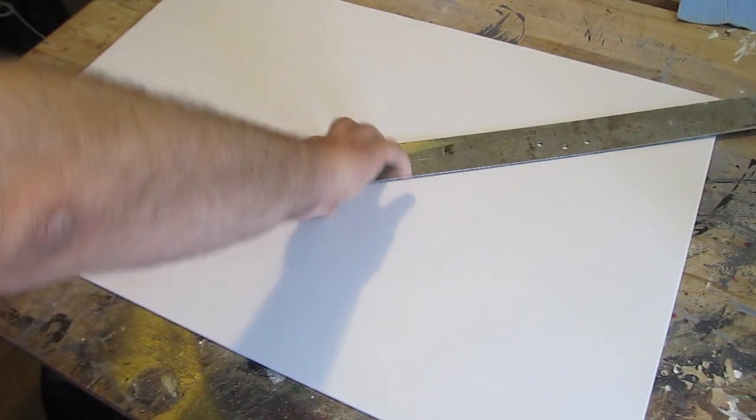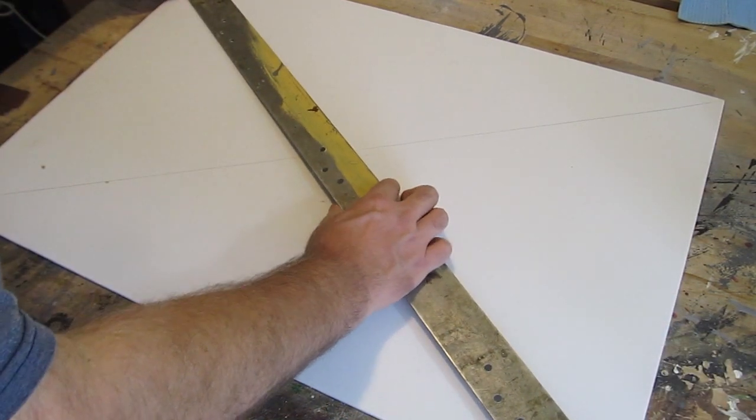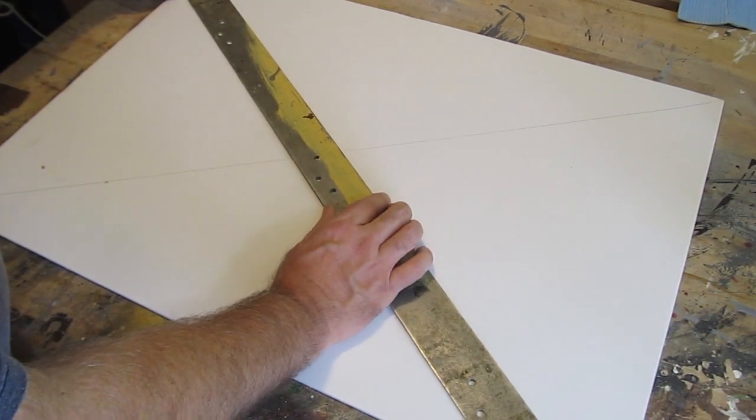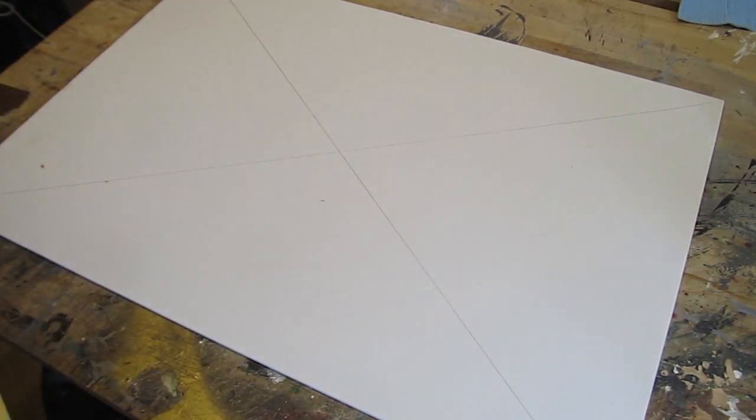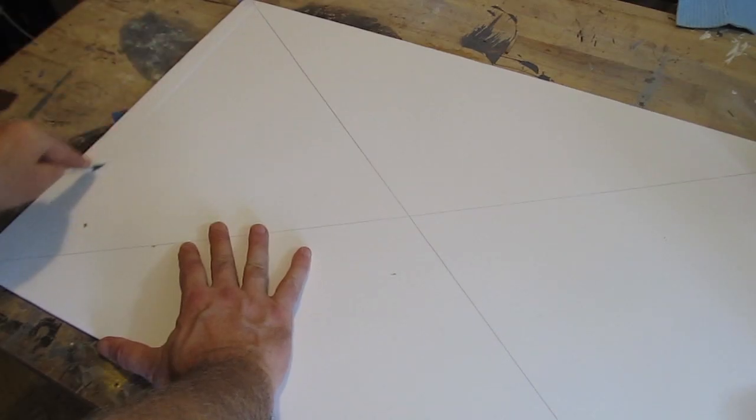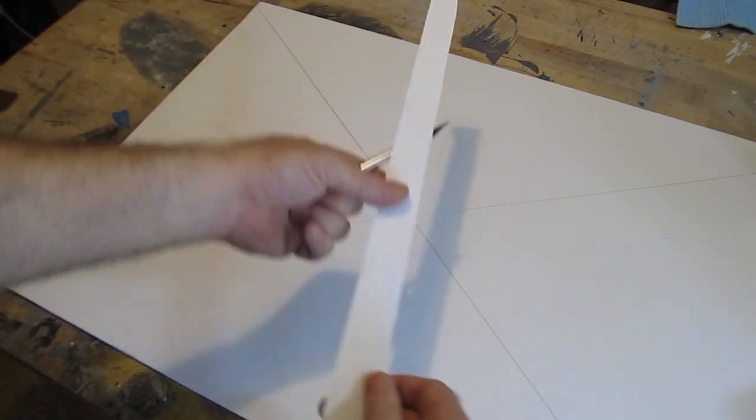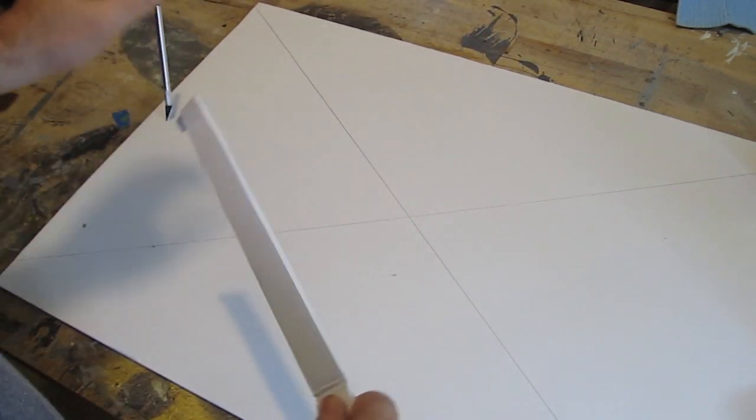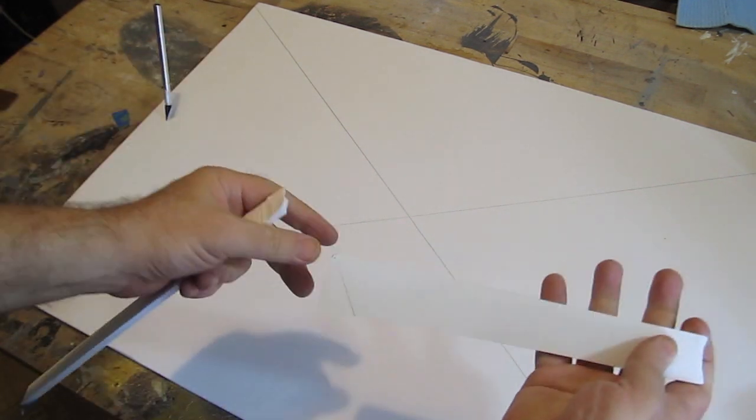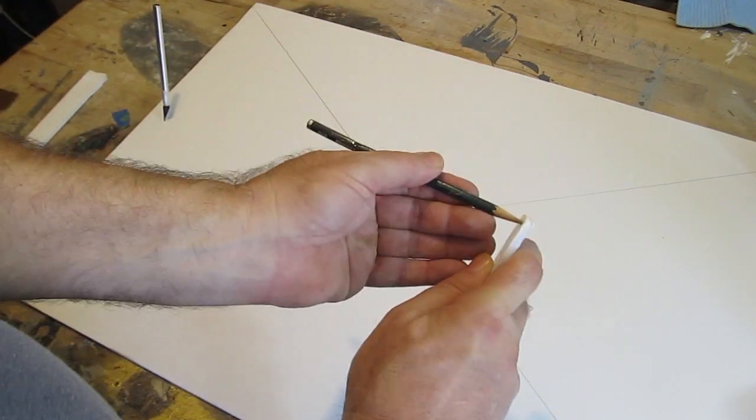Grab yourself a sheet of foam board. And you can use cardboard for this. You don't have to use foam board. But let's go with the foam board. This is 20 by 30 inches, 5 millimeters thick. Draw an X diagonally from corner to corner. And then cut an inch strip off one end. And then break that strip in half. Because now we're going to use that as a compass to draw a circle of our shield. The easy way.